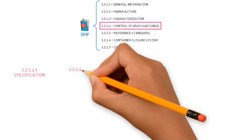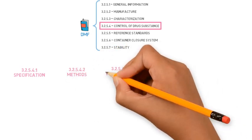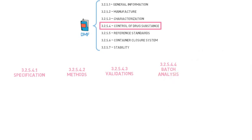This section is divided in five parts: Specification, Methods, Validations, Batch Analysis, and Justification of Specification.